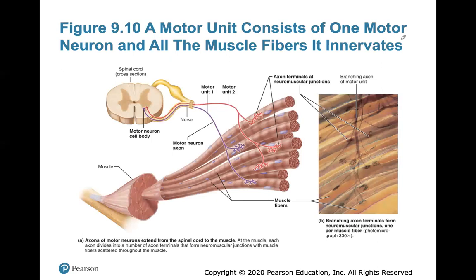Here's a look at a motor unit. A motor unit consists of one motor neuron and all of the muscle fibers it innervates. One motor unit shown here has two muscle fibers, and another motor unit in red has three muscle fibers because it branches into three.